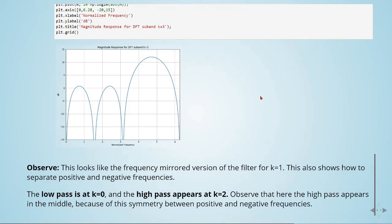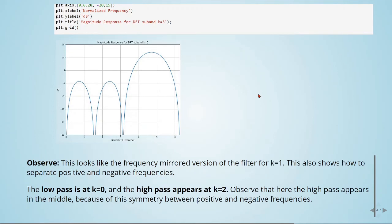Observe that this looks like the frequency mirrored version of the filter for k equals 1. This also shows how to separate positive and negative frequencies. The low pass is at k equals 0, and the high pass appears at k equals 2. Observe that here the high pass appears in the middle, because of this symmetry between positive and negative frequencies.